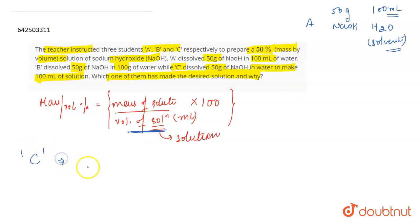If I talk about student C, then student C made a 50% solution by dissolving 50g of NaOH in water to make the volume of the solution to 100ml. This means that this particular student made the 50% mass by volume solution correctly because he made the total solution volume 100ml.